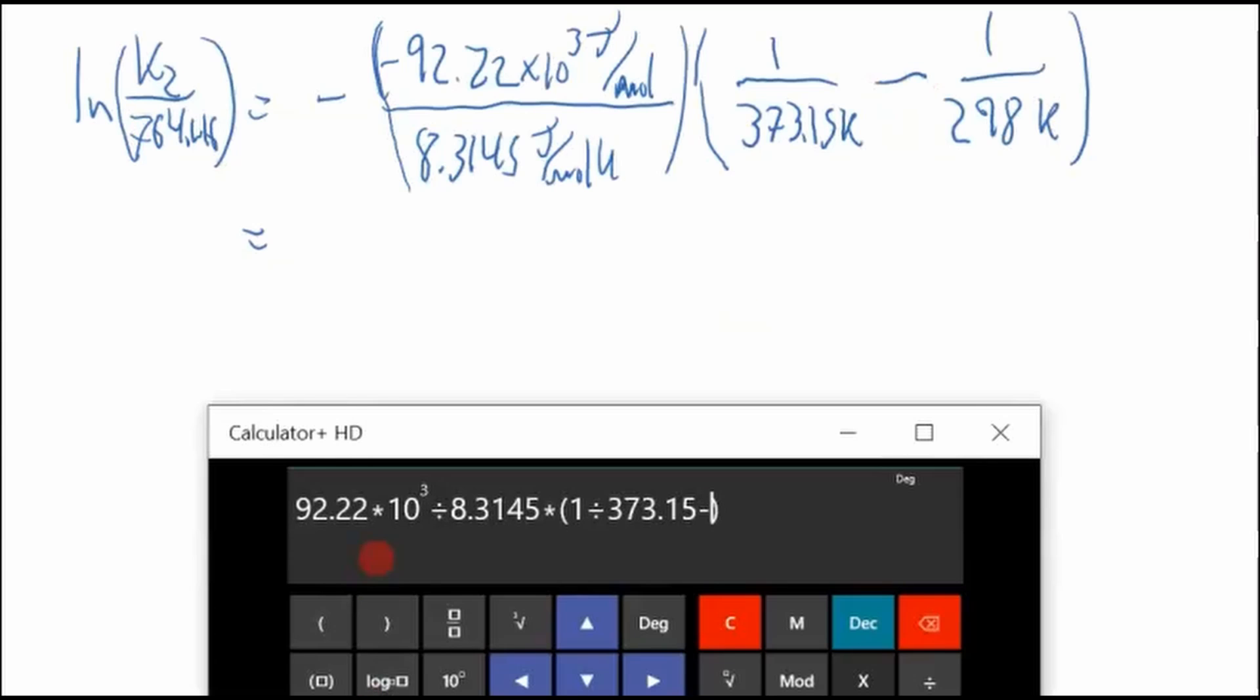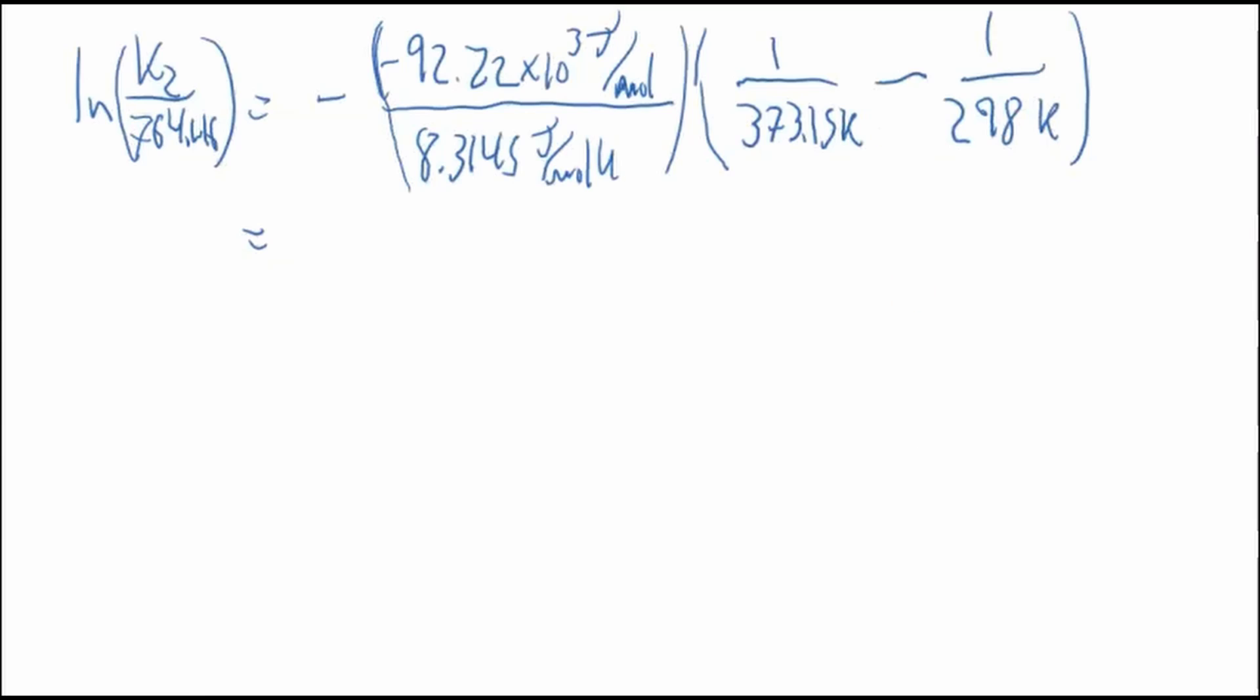Phew, minus. I love these calculators where you can see what you can type, and you can see if you made an error. Okay, so negative, not too big of a number. 7.496, 7.496. So negative 7.496. Was that negative? Yes, it was negative.